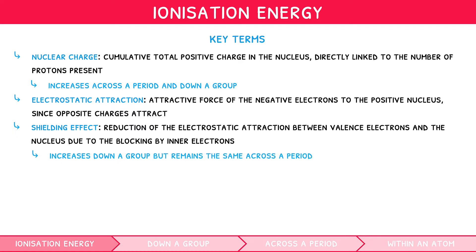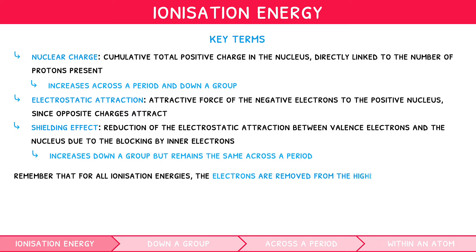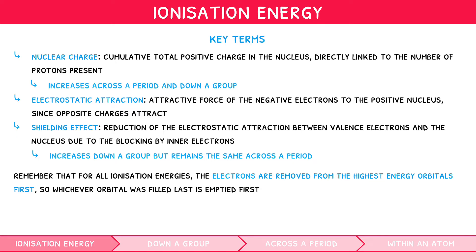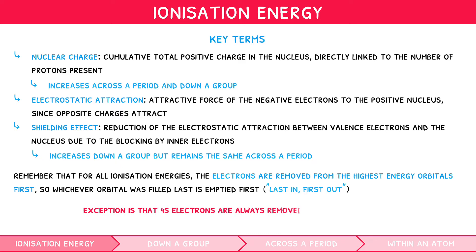It is very important to remember that for all ionization energies, electrons are removed from the highest energy orbitals first — whichever orbital was filled last is emptied first. This is remembered with the phrase: last in, first out. However, the major exception is that 4s electrons are always removed before 3d electrons. Remember this — it is crucial.